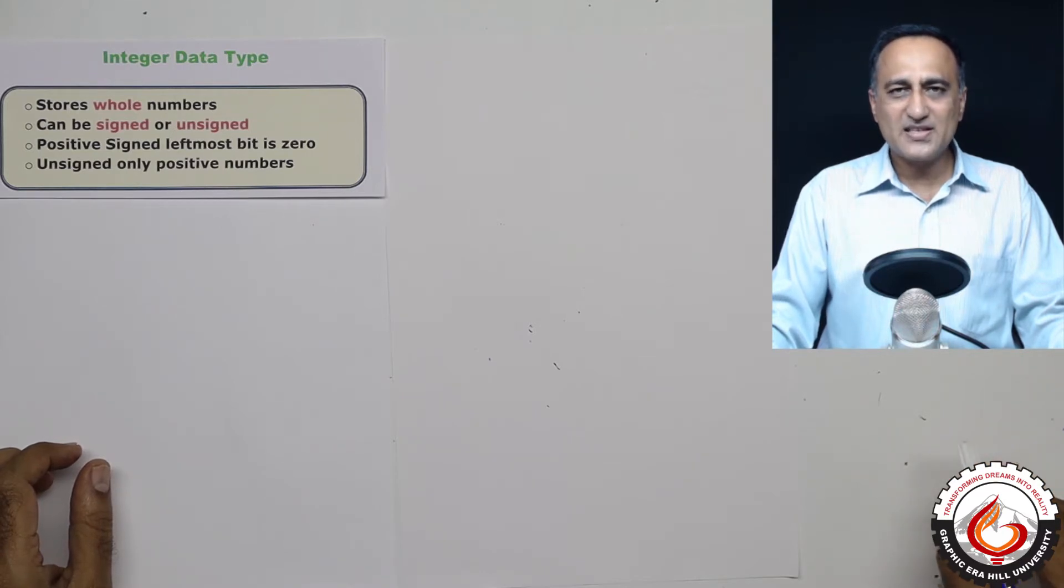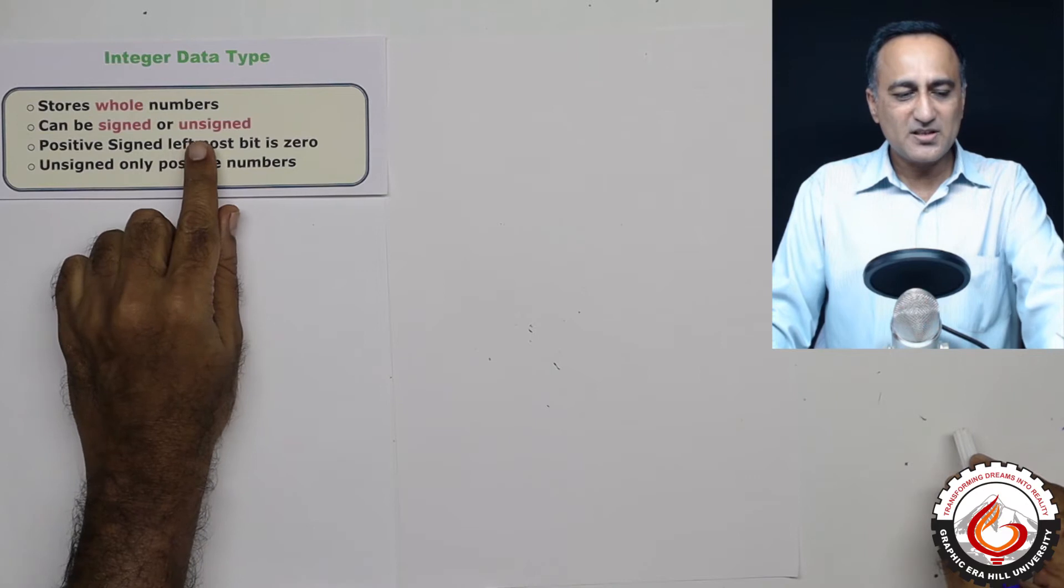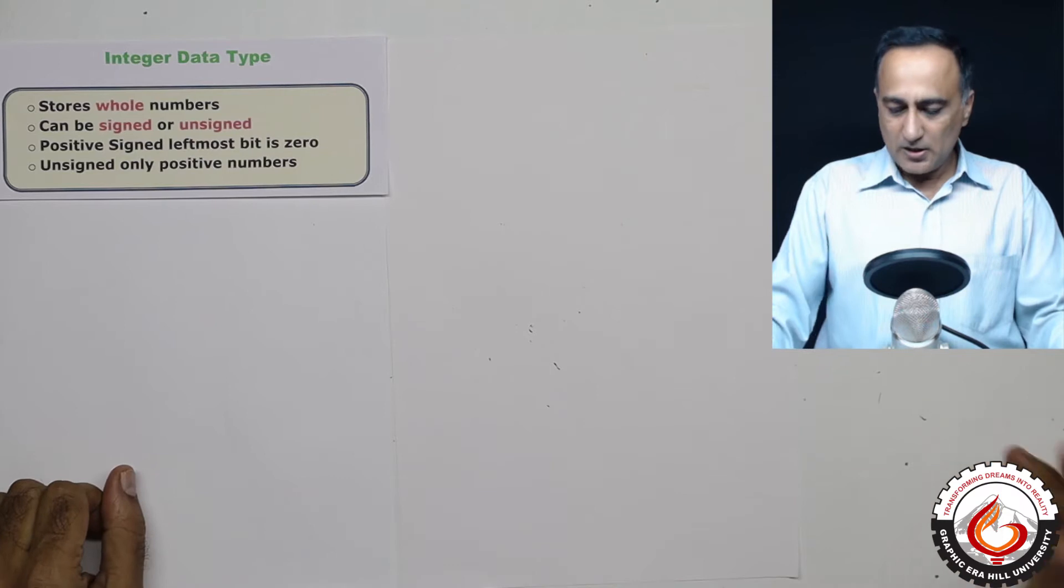Now integer numbers can be both positive or negative. That means signed indicates it can be both positive or negative. But if an integer is unsigned, that means it can only hold zero or positive numbers.